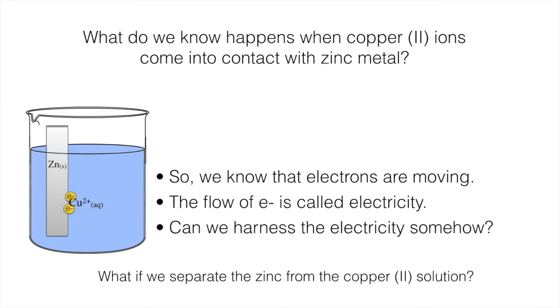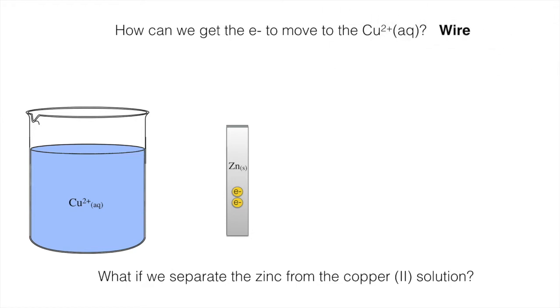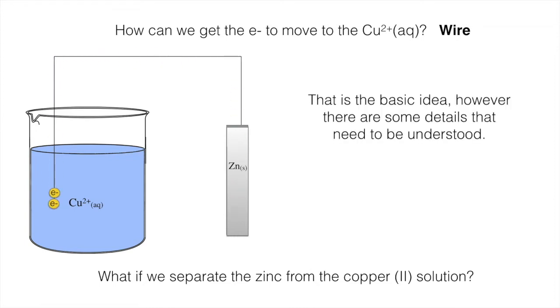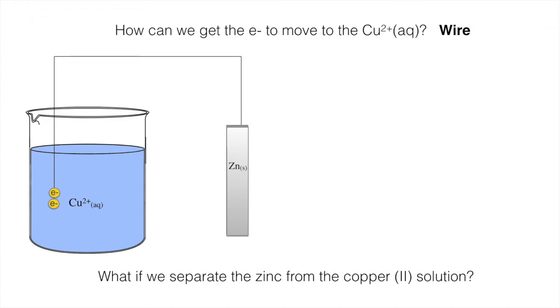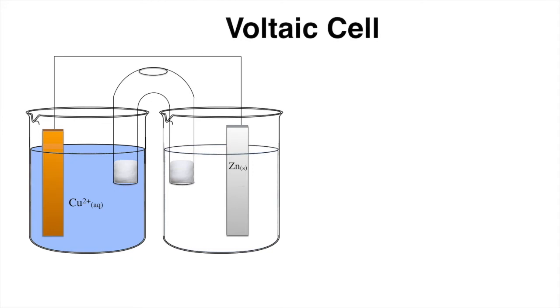What if we were to separate the zinc from the Copper 2 solution? What if we moved the zinc outside the beaker? Now we want to create the flow of electrons. How would we get the electrons to flow to Copper 2? They don't do us much good when it's inside the beaker, but if we can get electrons to flow a distance, we can put a device in between the flow and create electricity, which will power some device that we want. How can we get those electrons to move to the Copper 2? What about wire? What if we attached a wire? Now electrons will move and we can get them to do some work for us. That's the basic idea.